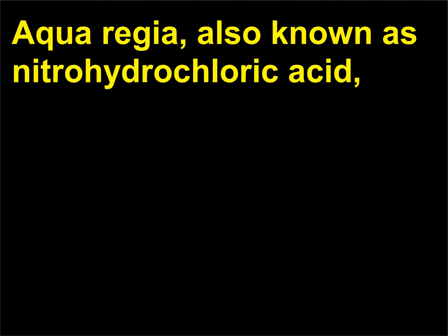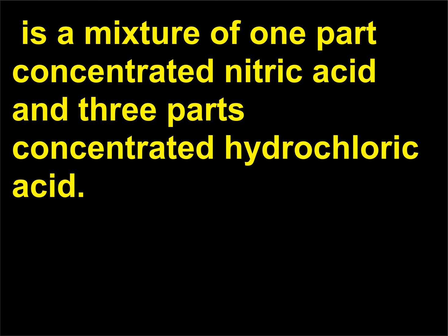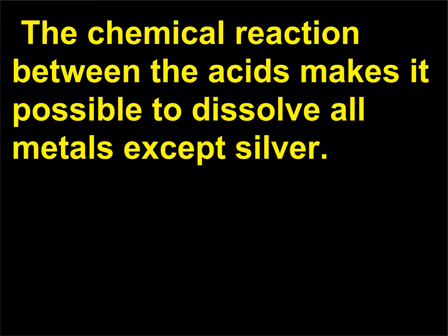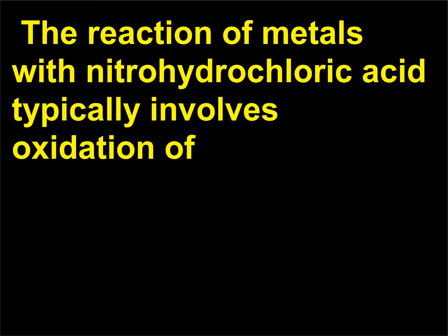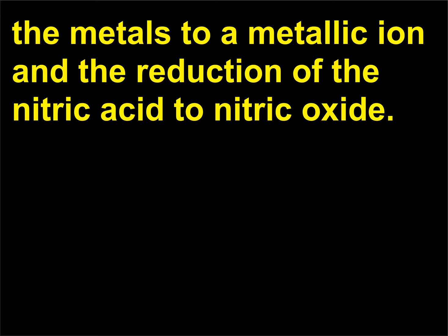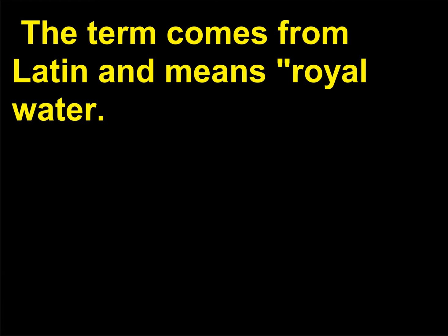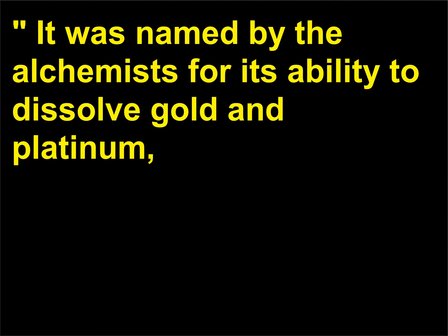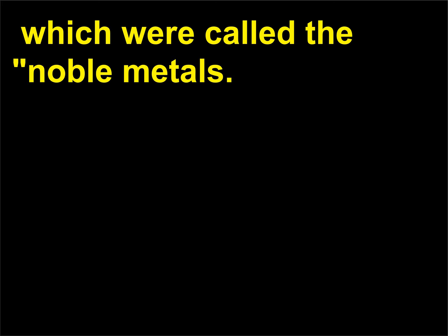What is aqua regia? Aqua regia, also known as nitro-hydrochloric acid, is a mixture of one part concentrated nitric acid and three parts concentrated hydrochloric acid. The chemical reaction between the acids makes it possible to dissolve all metals except silver. The reaction of metals with nitro-hydrochloric acid typically involves oxidation of the metals to a metallic ion and the reduction of nitric acid to nitric oxide. The term comes from Latin and means 'royal water.' It was named by the alchemists for its ability to dissolve gold and platinum, which were called the noble metals.